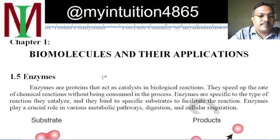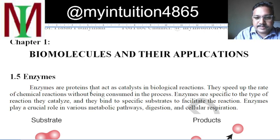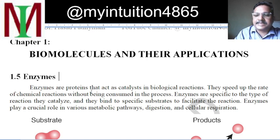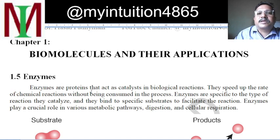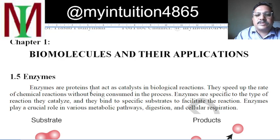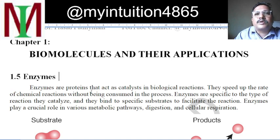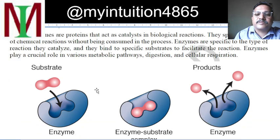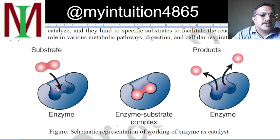Enzymes are proteins, as already discussed in the previous class. Enzymes are a particular type of protein used as a catalyst — they speed up the rate of a chemical reaction without being consumed in the process. Enzymes are very specific to the type of reaction they catalyze, and they bind to a specific substrate to facilitate the reaction. This is what we call the key-lock mechanism in the case of enzymes.